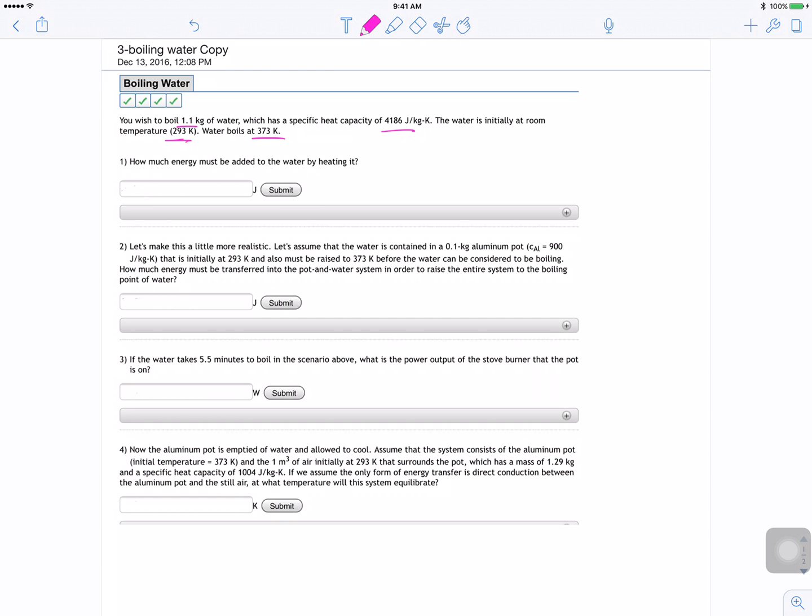So they're asking how much energy must be added to the water by heating it in order for it to go to the boiling point. So we're going to do Q is going to be equal to MC delta T, and then the mass is 1.1, and then the heat capacity 4186, and then the temperature is 373 and it's 293, and then the heat to boil the water to reach the boiling point is 368,368 joules. Cool.